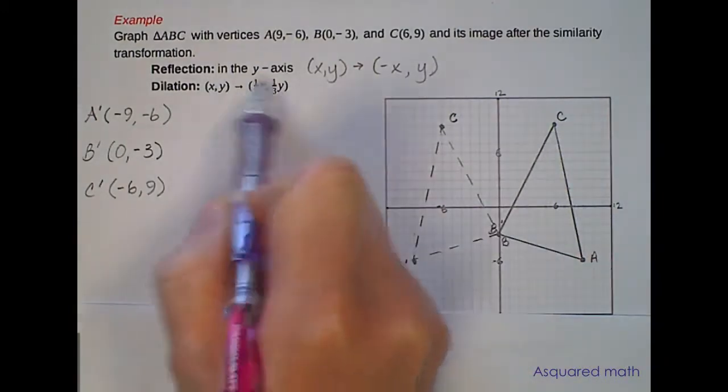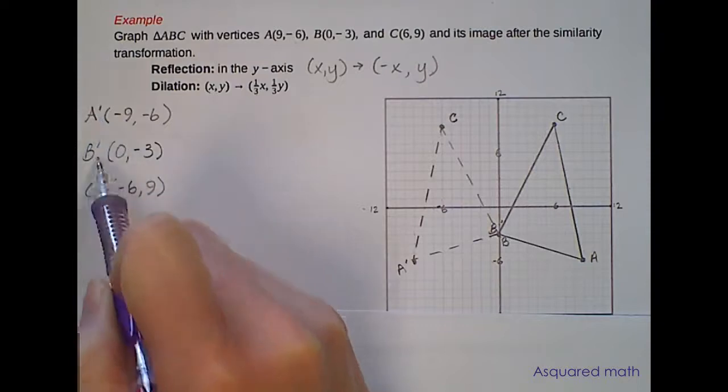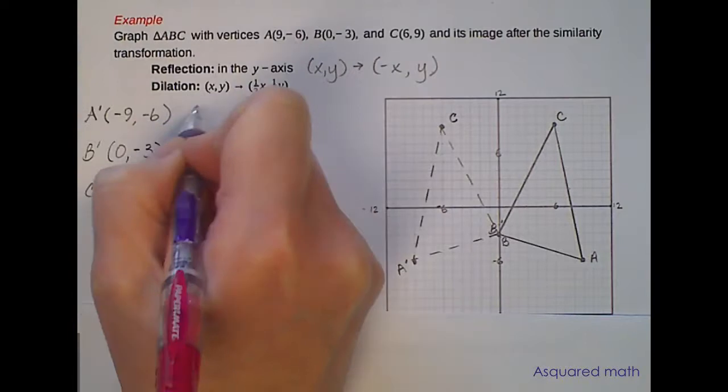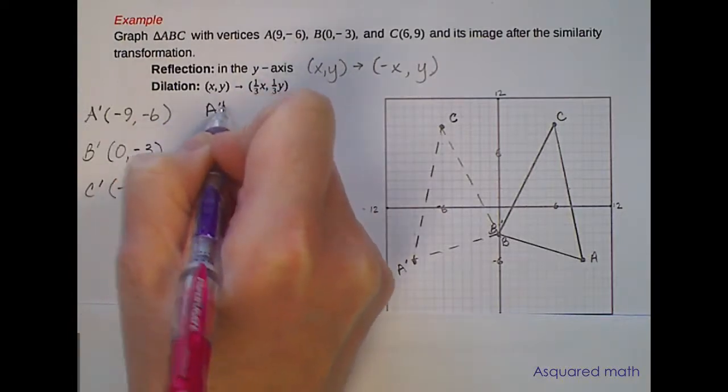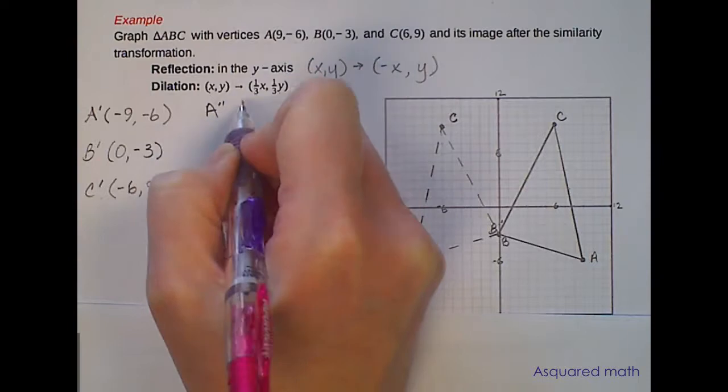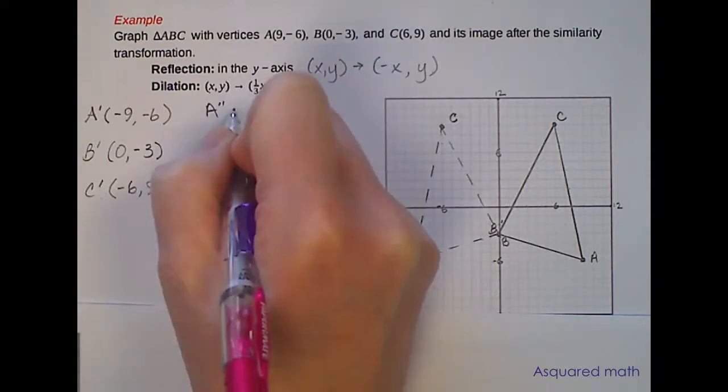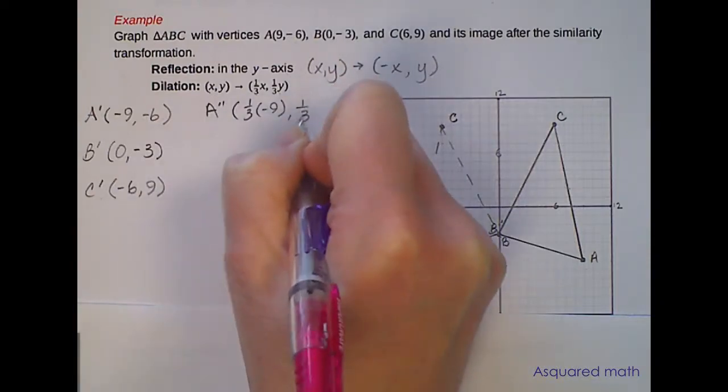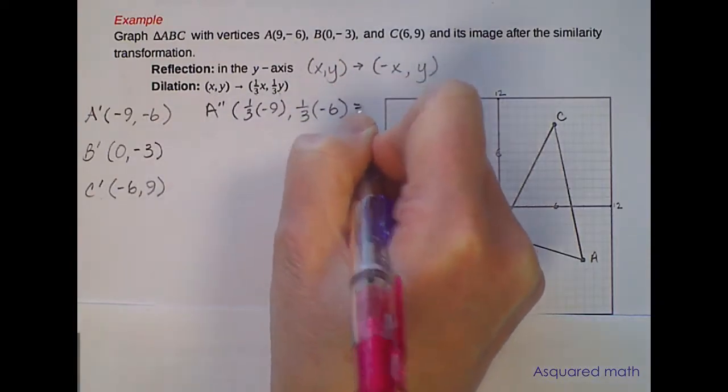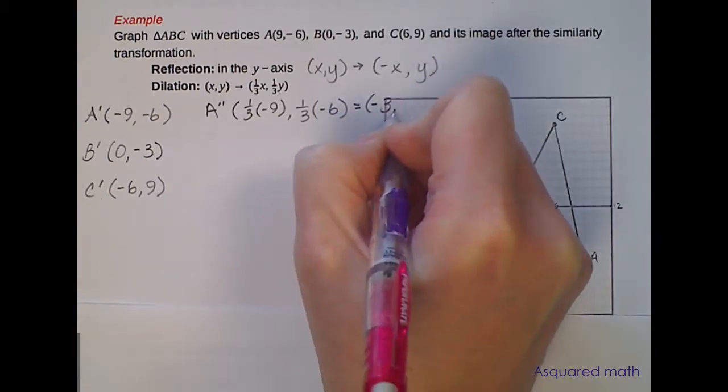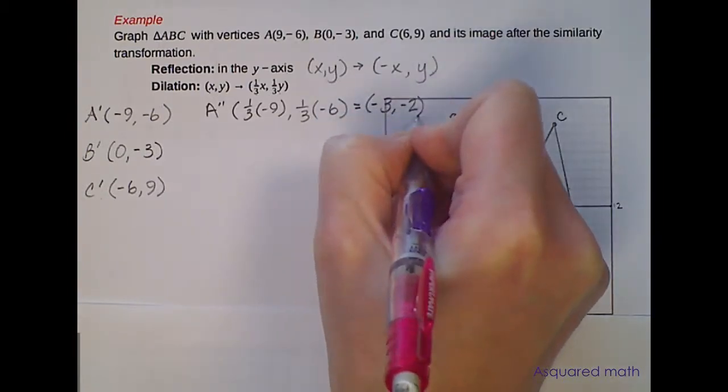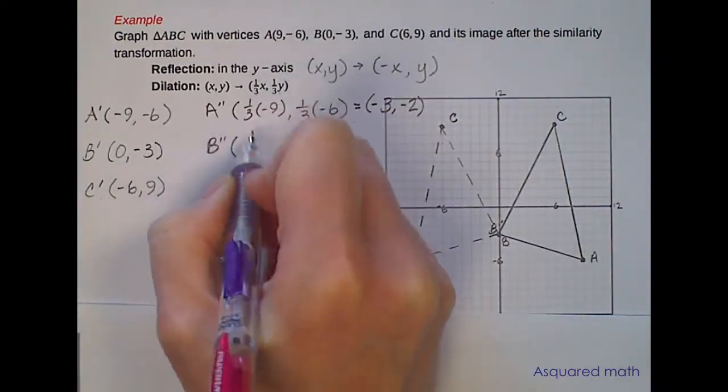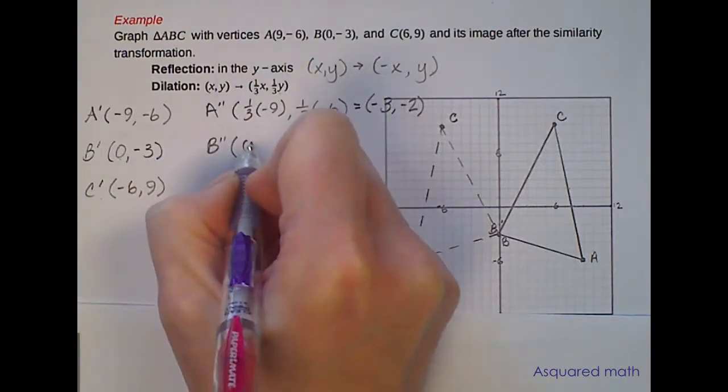And now we need to apply this rule where we take these now A prime, B prime, C prime points and we take one-third the value of the x and one-third the value of the y. So if we now look at A prime, because we're applying a second rule here we're going to take one-third of -9 and then one-third of -6 and that gives us a value of -3, -2 for A double prime. Applying the same rules to 0 and -3, one-third of 0 is 0, one-third of -3 is -1.